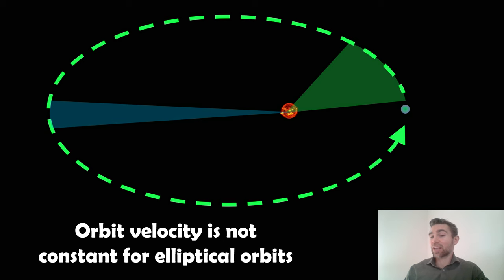What that means physically is when Earth is closest to the Sun on its orbit, it has to orbit faster to sweep out the same area that it would sweep out on the opposite side. You've got the green area there and the blue area.